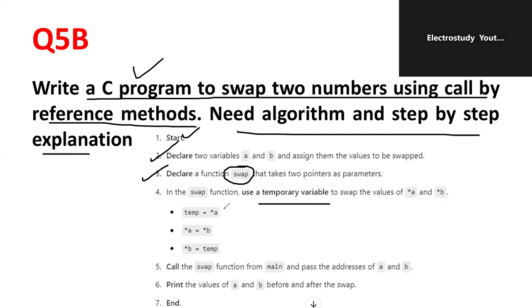In the swap function, use temporary variable. Like select the temporary variable temp that is equal to star a. Because we require swapping now. A, b, c. Then, b like a will be stored in b. C will be stored in b. Like that some swapping you have to do it. Then, another temporary function that is star a. Star a that is equal to star b. So, star b will be stored into star a. Then, star b is equal to temp. Call the swap function in main and pass the addresses of a and b respectively. Print the value of a and b before and after the swap. Then, you will be ending the program.